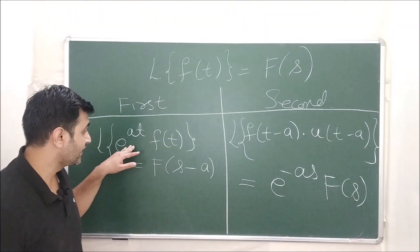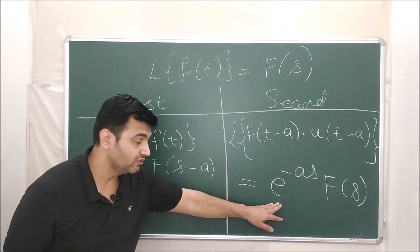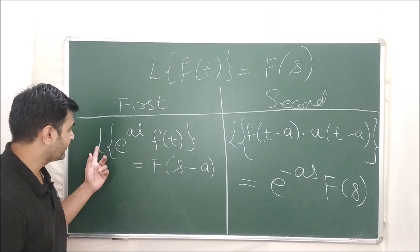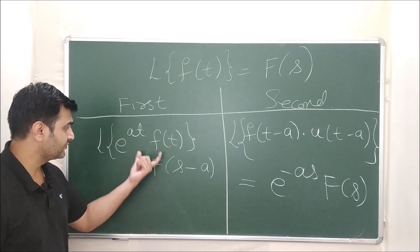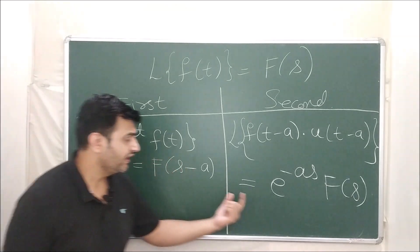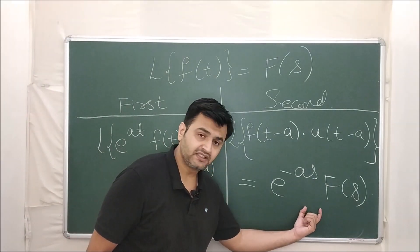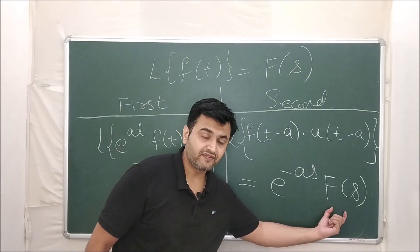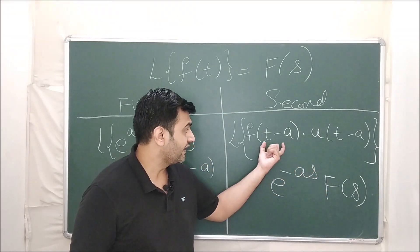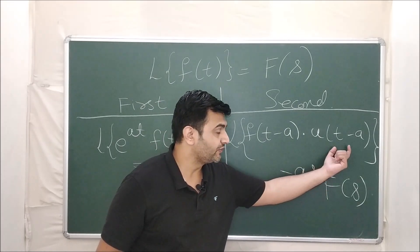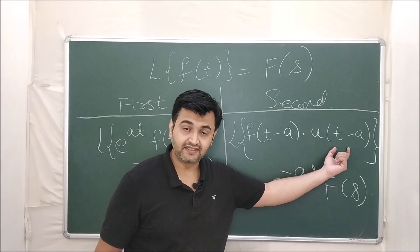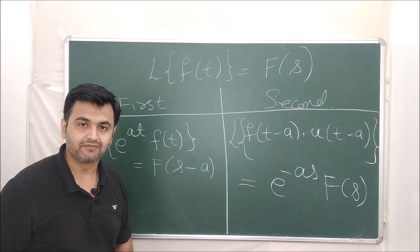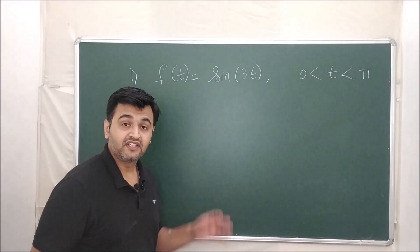That's how the exponential comes into picture. When you take the Laplace inverse, if you have e raised to minus as into F(s), you get f(t − a) · u(t − a). Now let's take some examples.